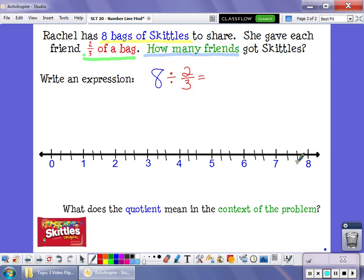And now I need to figure out how many groups of two-thirds are inside of eight. So again, I'm going to look. This group of two-thirds right here, that means one friend can have Skittles. And then I do two. This is her second friend. This would be her third friend. Her fourth friend.